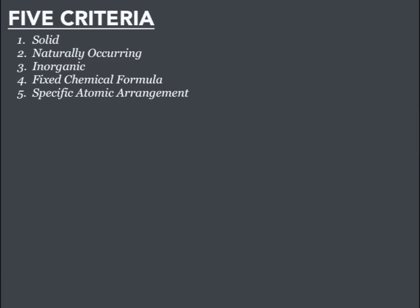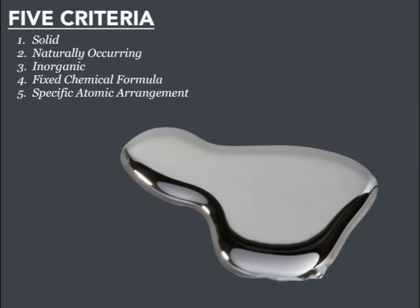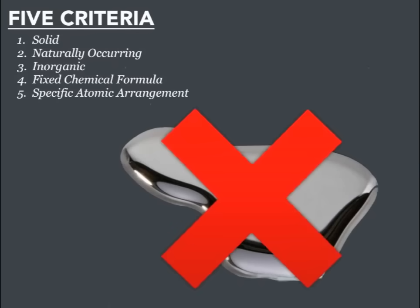So let's test ourselves a little bit. Here are those five criteria: must be solid, naturally occurring, inorganic, have a fixed chemical formula, and a specific atomic arrangement. So what about this pool of liquid mercury? Can this be considered a mineral? Well, if you look at criteria number one, it says it must be a solid, and this clearly is a liquid. So, sorry mercury, you're not a mineral.